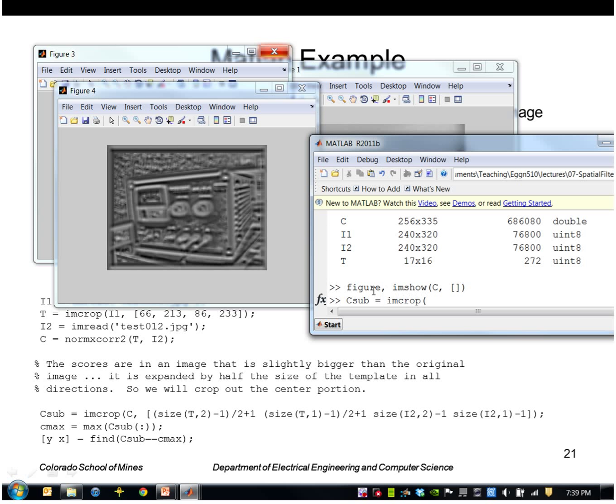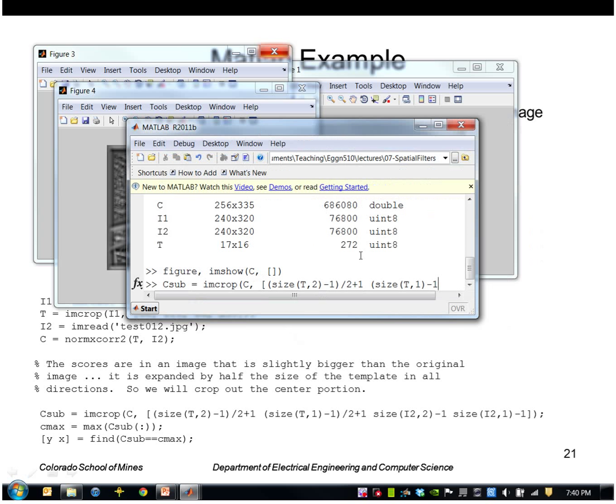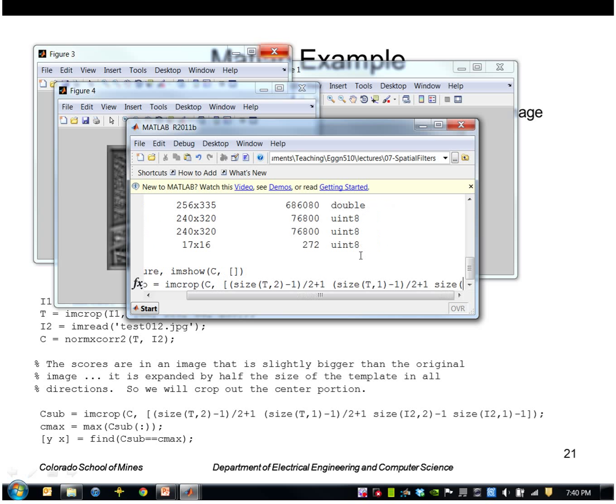So I'll use IMCrop again, this time on C, and I'll say take the size of the template in dimension 2 divided by 2 plus 1, the size of the template in dimension 1 divided by 2 plus 1, and then go to...